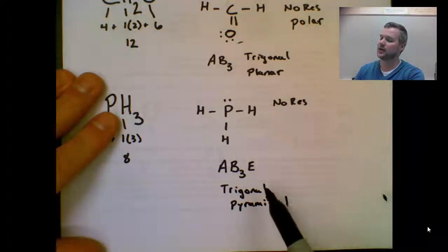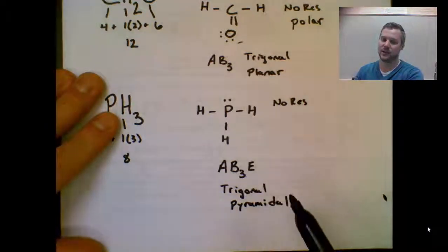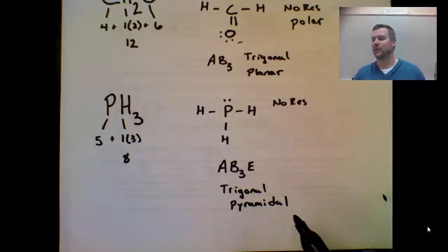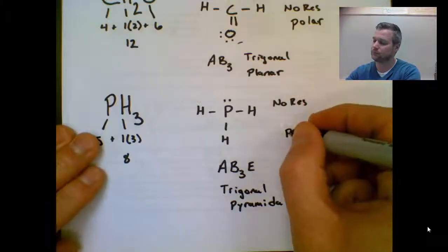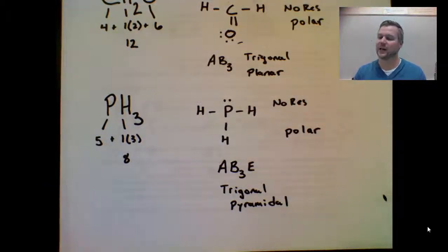And what that means is that the electrons are going to not get pulled evenly, and they won't cancel out, making this a polar molecule. So those vectors will not cancel out. Moving forward.